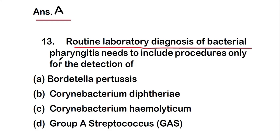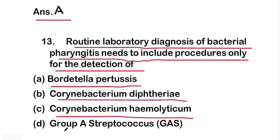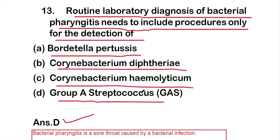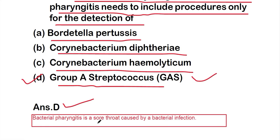Question 13: Routine laboratory diagnosis of bacterial pharyngitis needs to include procedures only for the detection of — option A: Bordetella pertussis; option B: Corynebacterium diphtheriae; option C: Corynebacterium haemolyticum; option D: group A Streptococcus. The right answer is option D: group A Streptococcus. Bacterial pharyngitis is a sore throat caused by a bacterial infection affecting the pharynx.